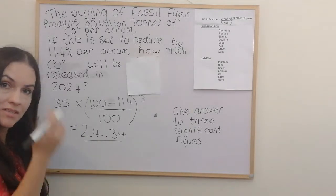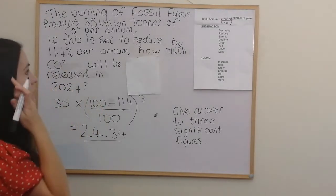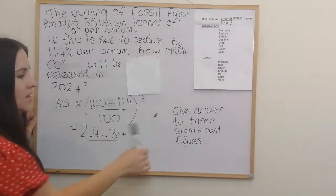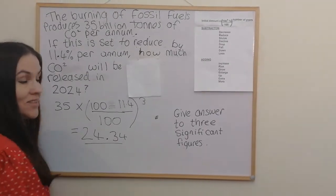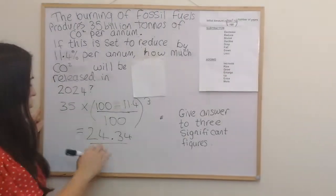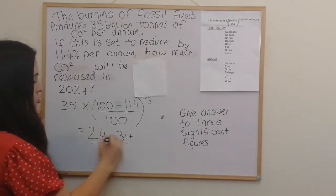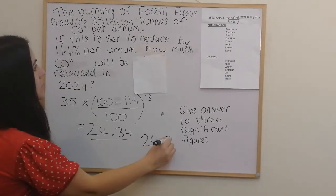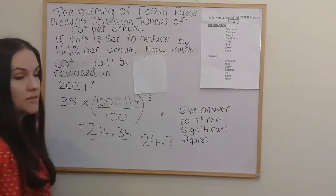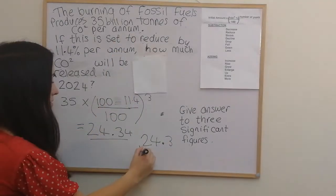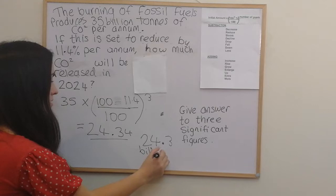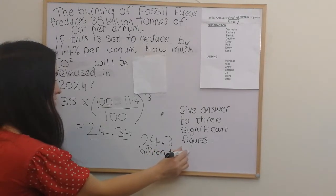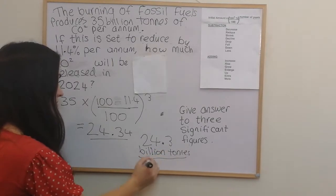What often happens in these questions — and this is very much an exam-style question — is it will say give your answer to three significant figures. So we just round it: the answer is 24.3 billion tons, and that's the final answer.